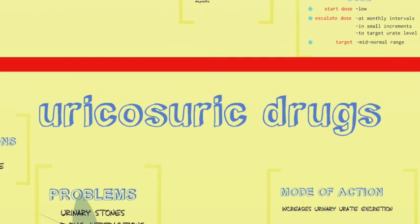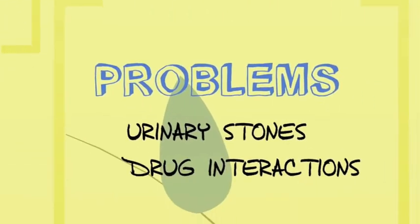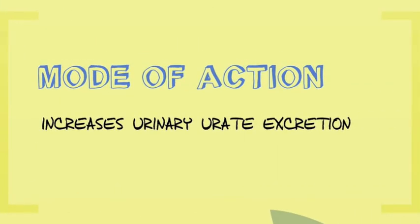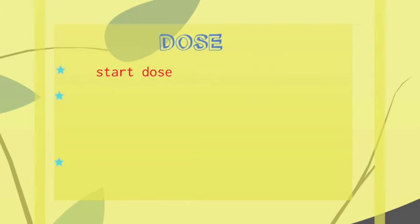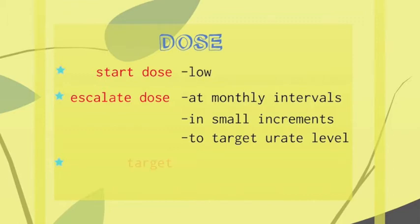Uricosuric agents, on the other hand, are less often used. The two commonly used preparations are probenecid and sulfinpyrazone. They can cause urinary stones if urinary output isn't maintained fairly high in order to keep the urinary uric acid soluble. They can interact with drugs by impairing excretion. They increase urinary uric acid excretion, hence they lower the urate load. The same dosing rules apply: start the dose low, escalate at monthly intervals in small increments to the target, which again is the mid-normal range of the uric acid level.